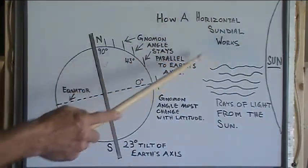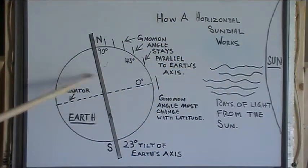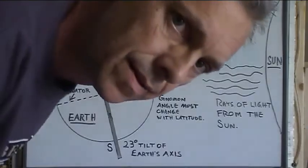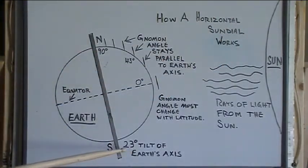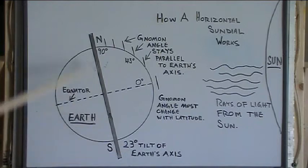So now that you have a basic understanding of the parts of a sundial, let's take a look at how a horizontal sundial works. Here's the earth, here's the sun. Not to scale. The earth has a tilt of about 23 degrees on its axis.